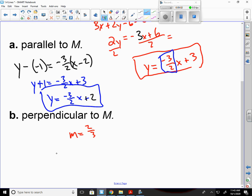And now I just plug my point back in. y minus negative 1 equals 2 thirds times x minus 2. This is going to become a plus 1 again. This is 2 thirds x minus 4 thirds.